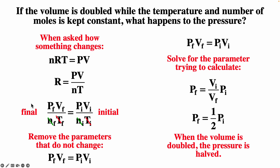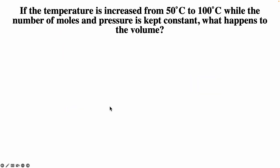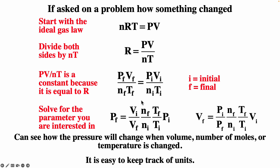This equation is useful whenever parameters change. Solving for P_final: P_f = (V_i/V_f) × (n_f/n_i) × (T_f/T_i) × P_i. This shows that increasing volume decreases pressure, increasing number of moles increases pressure, and increasing temperature increases pressure. We can also solve for V_final: V_f = (P_i/P_f) × (n_f/n_i) × (T_f/T_i) × V_i. Increasing pressure decreases volume; increasing moles or temperature increases volume.